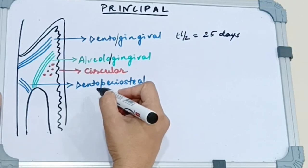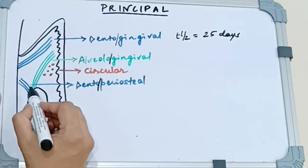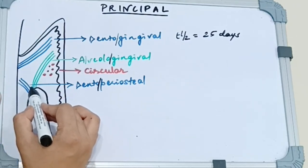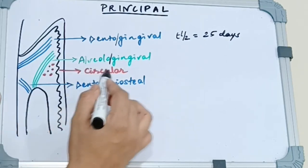Next we have the dentoperiosteum. What they do is they extend from the tooth and insert into the alveolar crest to blend with the fibers of the periosteum. So it anchors the tooth to the periosteum.